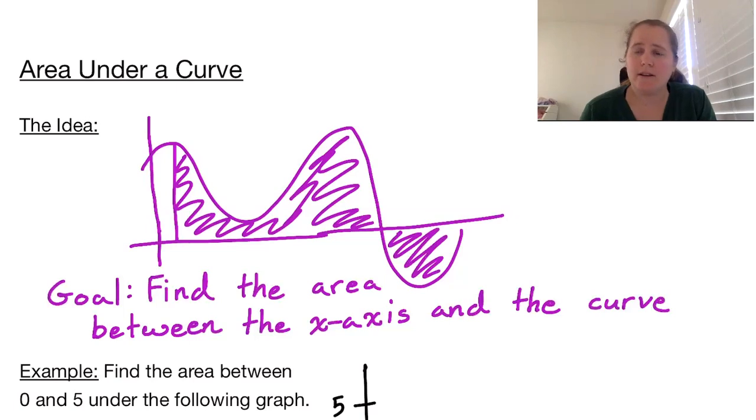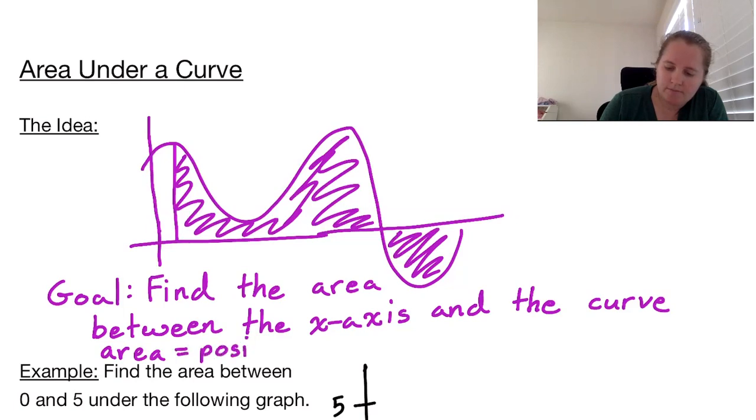We're going to consider area as positive if it's above the x-axis and negative if it's below. The area is positive if above the x-axis and negative if below.